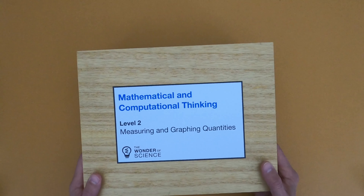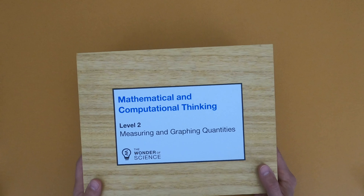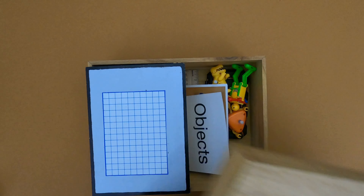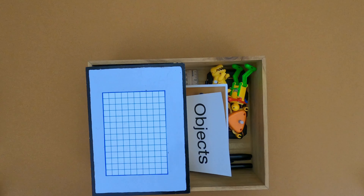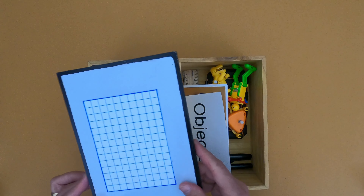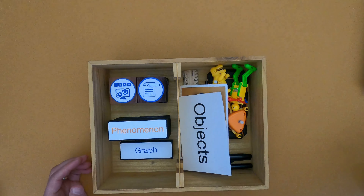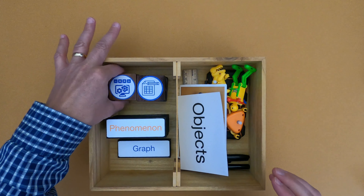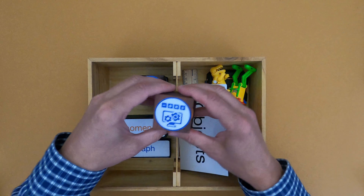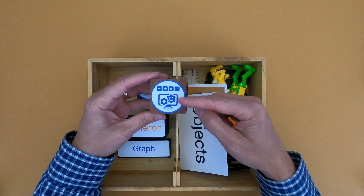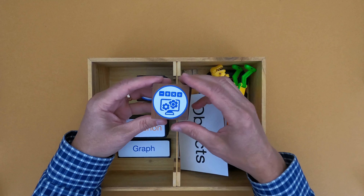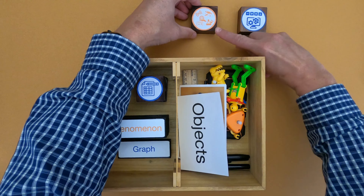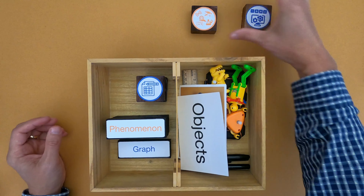Hi, it's Mr. Andersen and this is Mathematical and Computational Thinking, Level 2: Measuring and Graphing Quantities. The icon that represents this type of thinking is mathematical. We'll get to computational later, but you don't just do that by itself — it's always to better understand a phenomena.